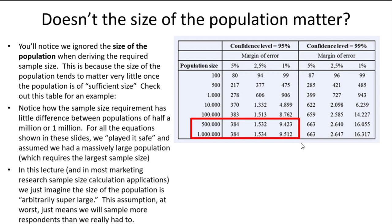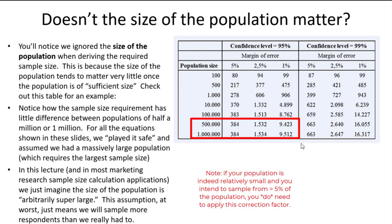In reality, we're just playing it safe. By assuming an infinite and arbitrarily large population, at worst we'll have an optimal sample size that's slightly larger than would have been required with a more convoluted calculation using the entire population size. With that said, it's really not a big deal to incorporate population information, but the equations change — simply Google 'finite population correction for sample sizes' and you'll see how to adapt these equations with relative ease.